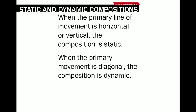Static and dynamic compositions are two ways of labeling a compositional space. A compositional space is static when the primary line of movement is horizontal or vertical, and it's dynamic when the primary movement is diagonal.